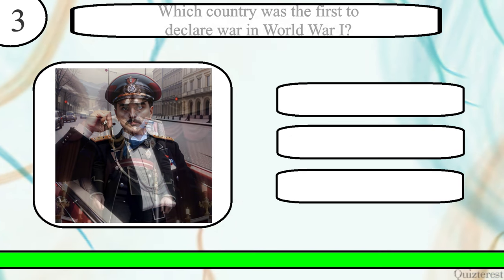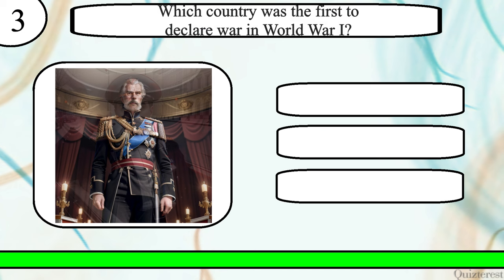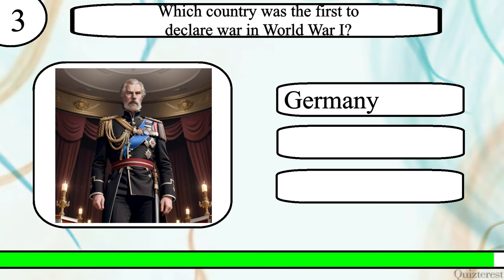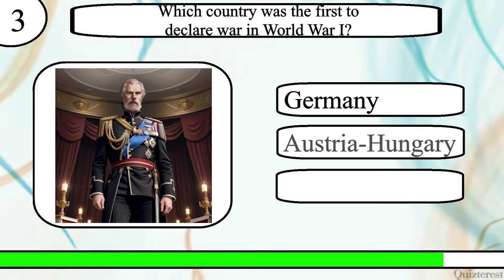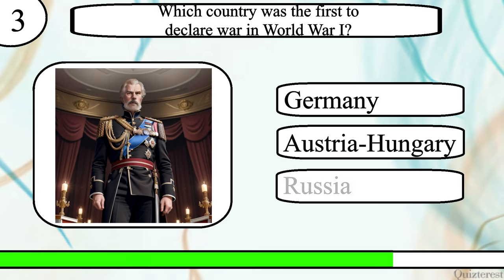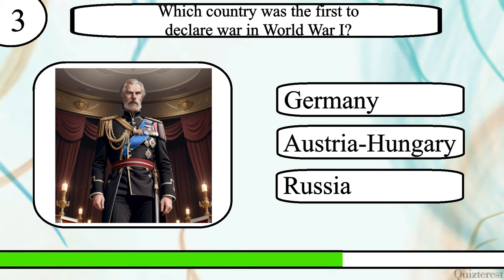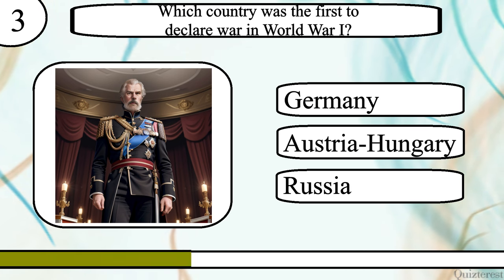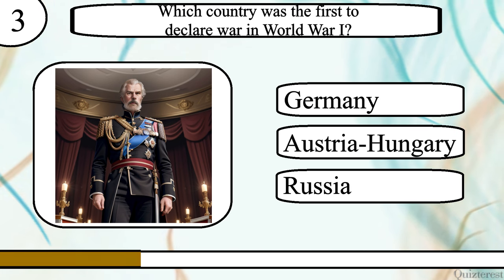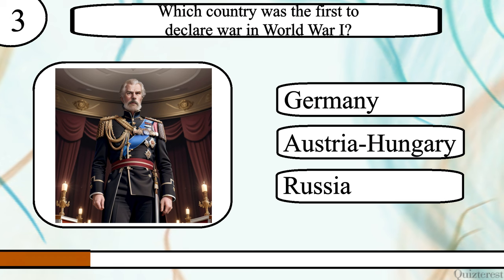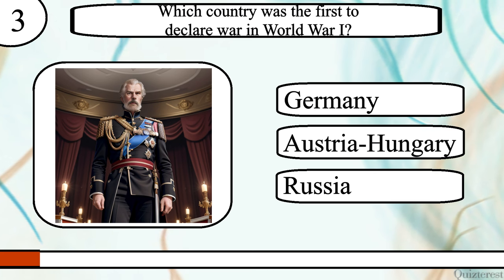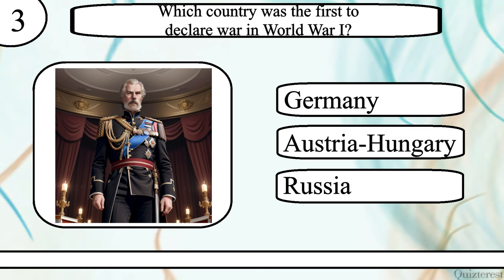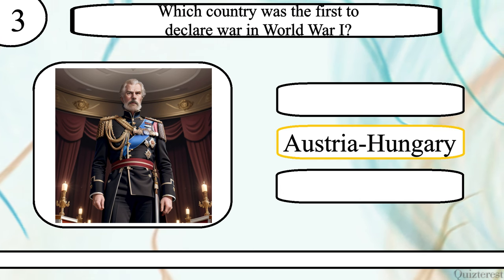Question 3. Which country was the first to declare war in World War I? Germany, Austria-Hungary or Russia? The correct answer is Austria-Hungary.